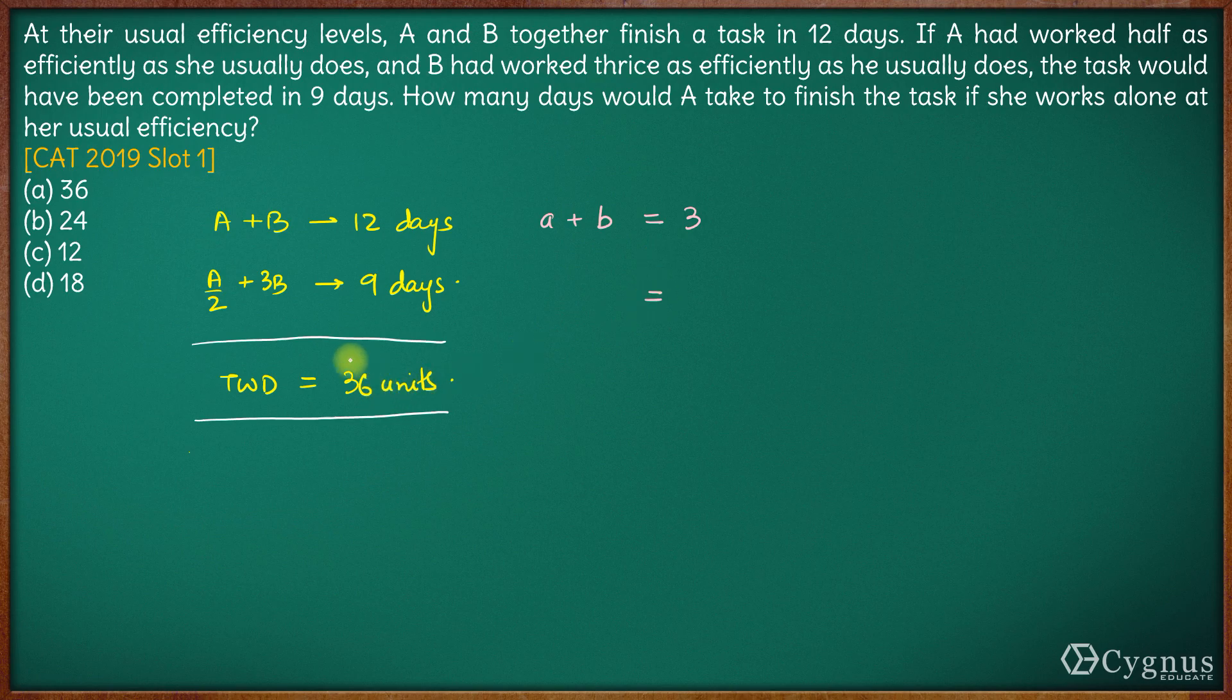Now in the second case, their combined efficiency will be 36 by 9 which is 4 units per day and this 4 will be equal to basically half the efficiency of A plus thrice the efficiency of B. This is the second equation.